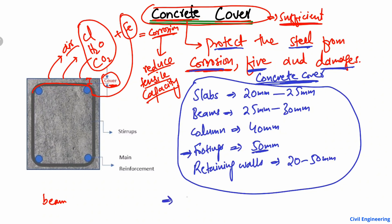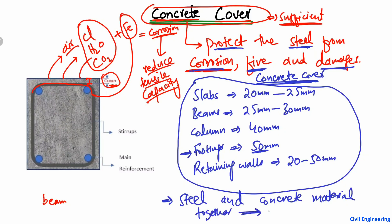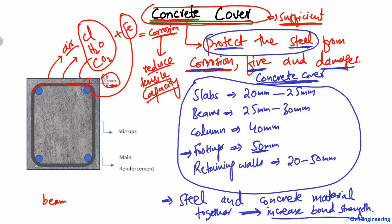Another purpose of the concrete cover is to hold the steel and concrete elements together — that is, to increase the bond strength between steel and concrete. However, this is the second reason. The first and most important reason is to protect the steel reinforcement bar from corrosion and other damages. By providing a higher concrete cover, the bond strength between the steel reinforcement and the concrete is increased.